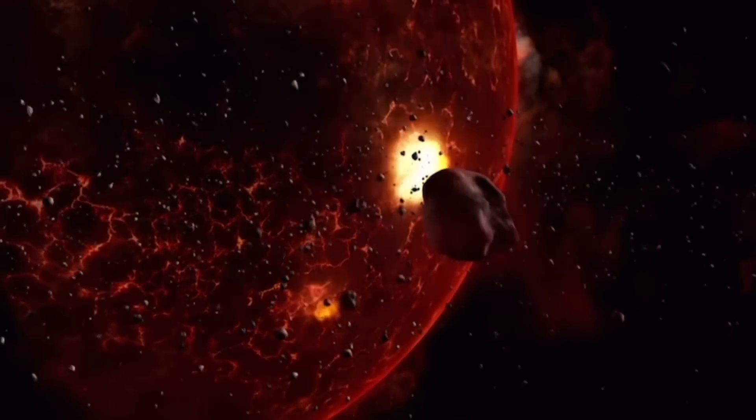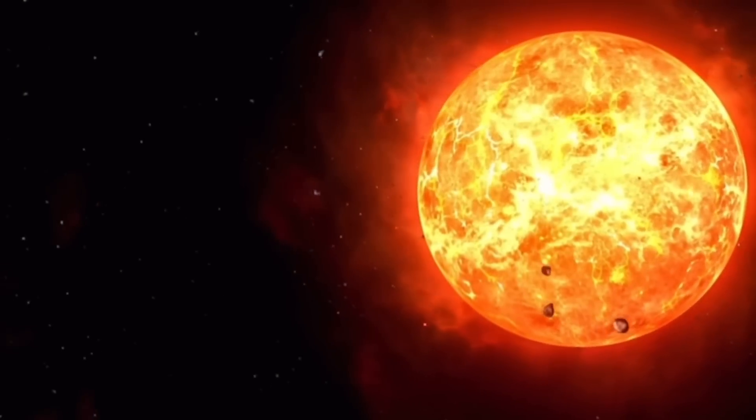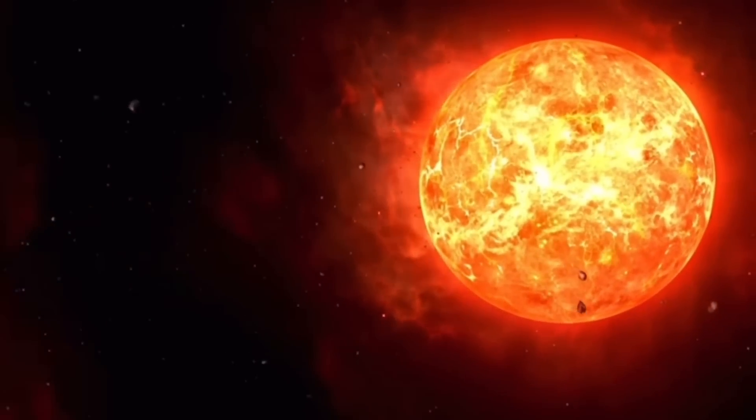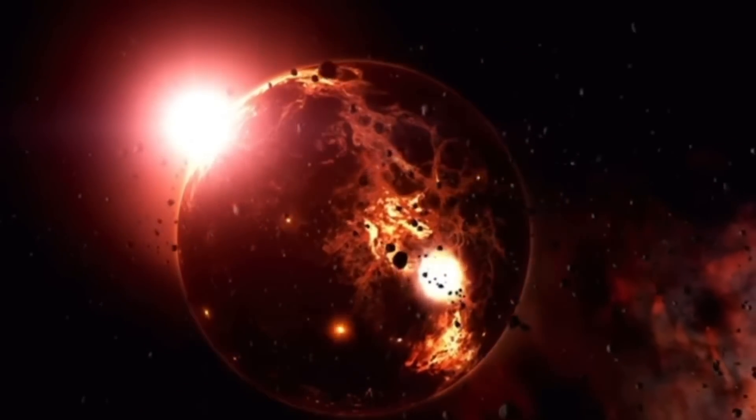The forming planet became so hot it completely melted. The denser elements sank to its core. The lighter elements rose and crusted to the surrounding negative 450 degrees space temperature.